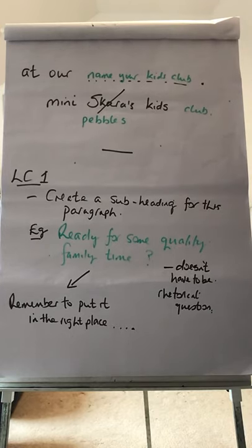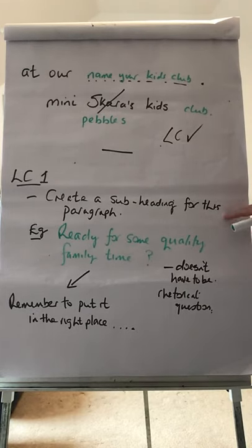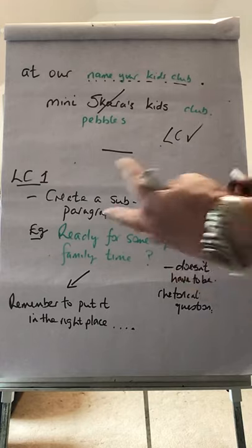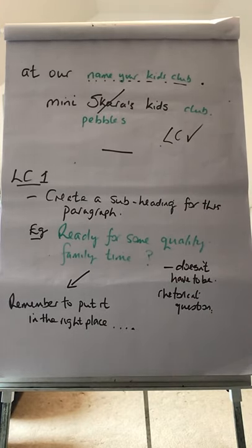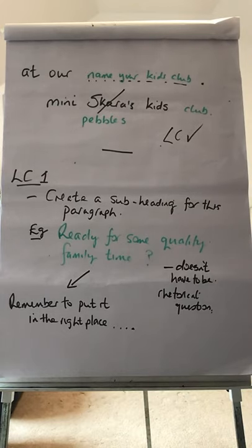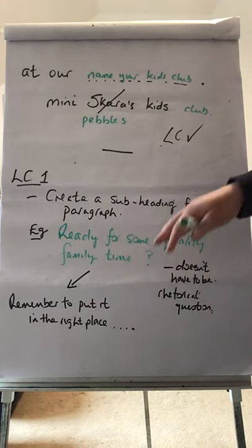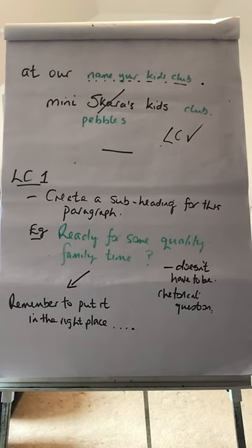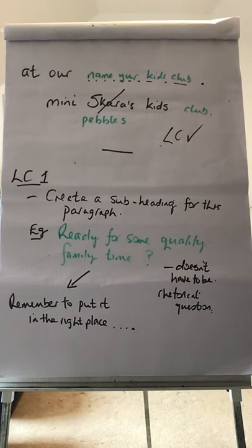That ends learning chunk three — ticked off. Remember, we're going to go back and put in a subheading for our paragraph. My subheading could be 'Ready for some quality family time?' — it's a rhetorical question. Yours doesn't have to be, but remember where you put it: it goes at the very start of all this writing. Today's lesson is quite straightforward. Learning chunk one is the headline, but you might do that right at the end and insert it in the correct place. Learning chunk two is all about what facilities or activities adults have on offer, and learning chunk three is about the kids club. Think of the activities the children will be engaged in and then give your kids club a name. Best of luck, and I'll speak to you tomorrow.